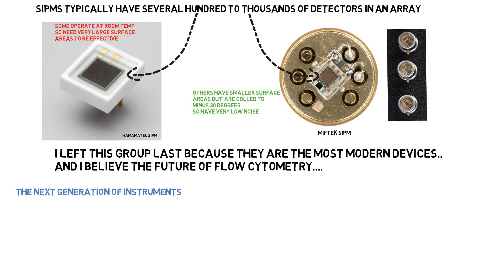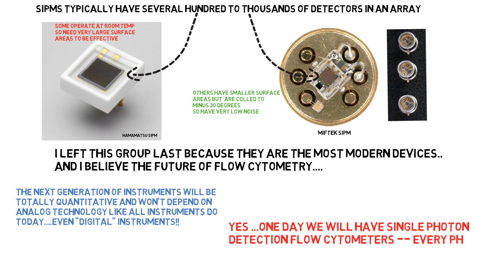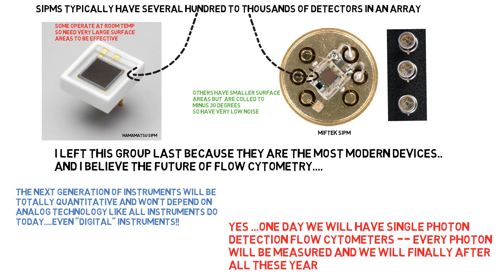The next generation of instruments will be totally quantitative and won't depend on analog technology like all instruments do today. Even instruments we call digital are actually analog instruments with digital electronics. One day we'll have single-photon detection flow cytometers — every photon will be measured, and we will finally have true quantitation in flow cytometry.